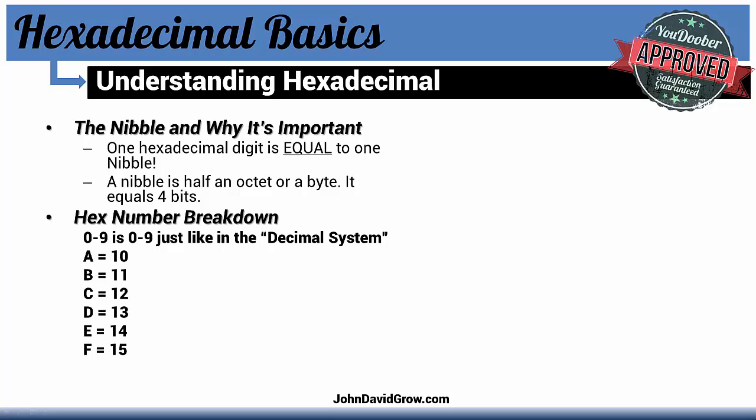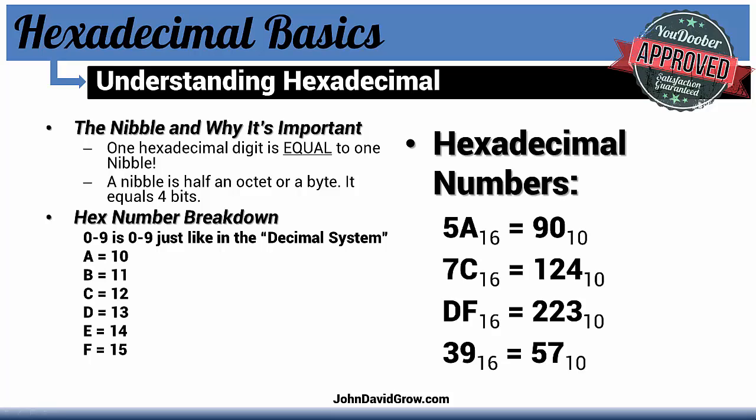Let's look at some examples of hexadecimal numbers — here we have hex numbers and their decimal counterparts. 5A in hex is equal to 90 in decimal. 7C in hex is equal to 124 in decimal.